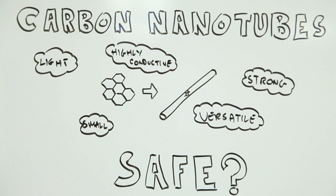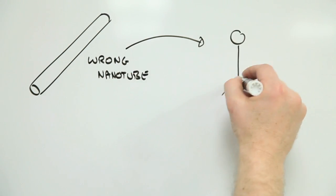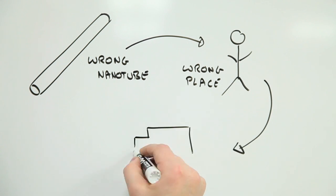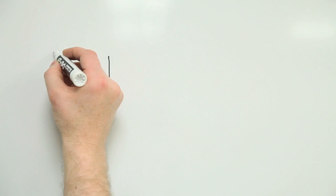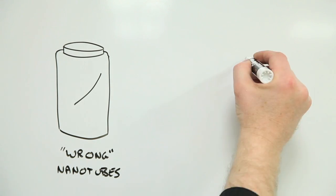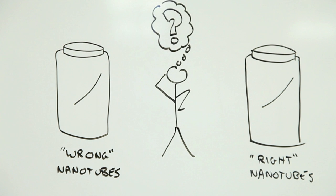But how safe are they? Research is increasingly showing that the wrong carbon nanotubes in the wrong place are potentially bad news for your health. The trouble is, this isn't much help without knowing what a wrong carbon nanotube looks like and what the wrong places are.